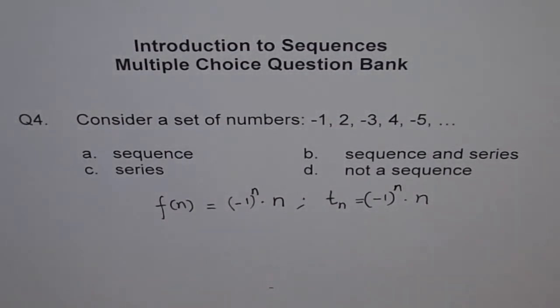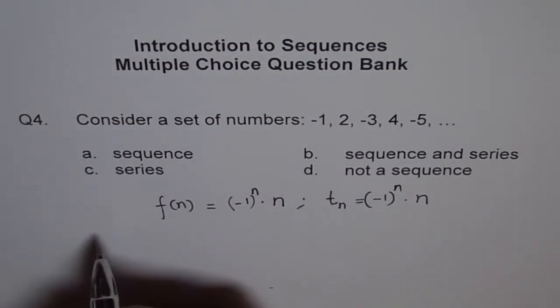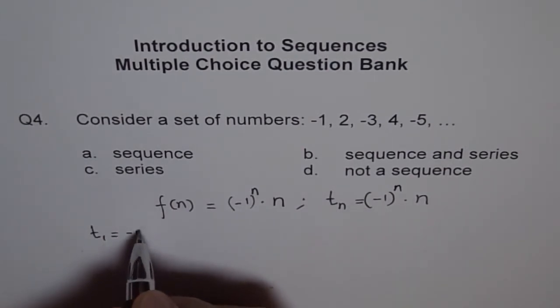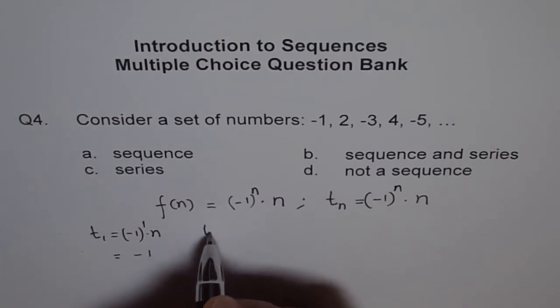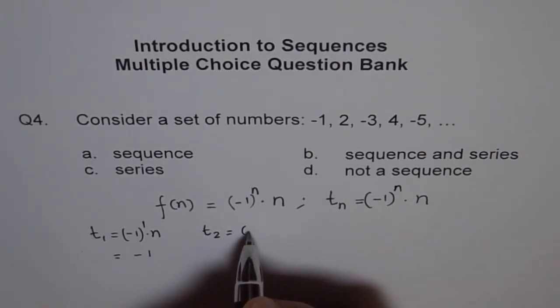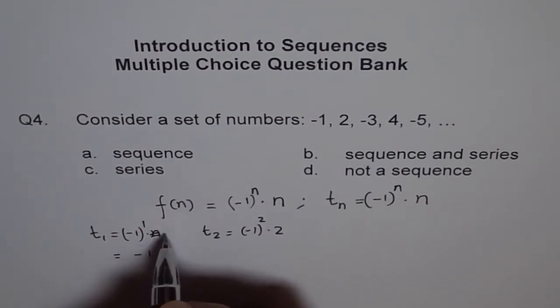If I write n as set of natural numbers, that's what I meant. So we say t₁ equals to (-1)^1 times 1, which equals -1. I should have put 1 here. Now, t₂ equals to (-1)^2 times 2.